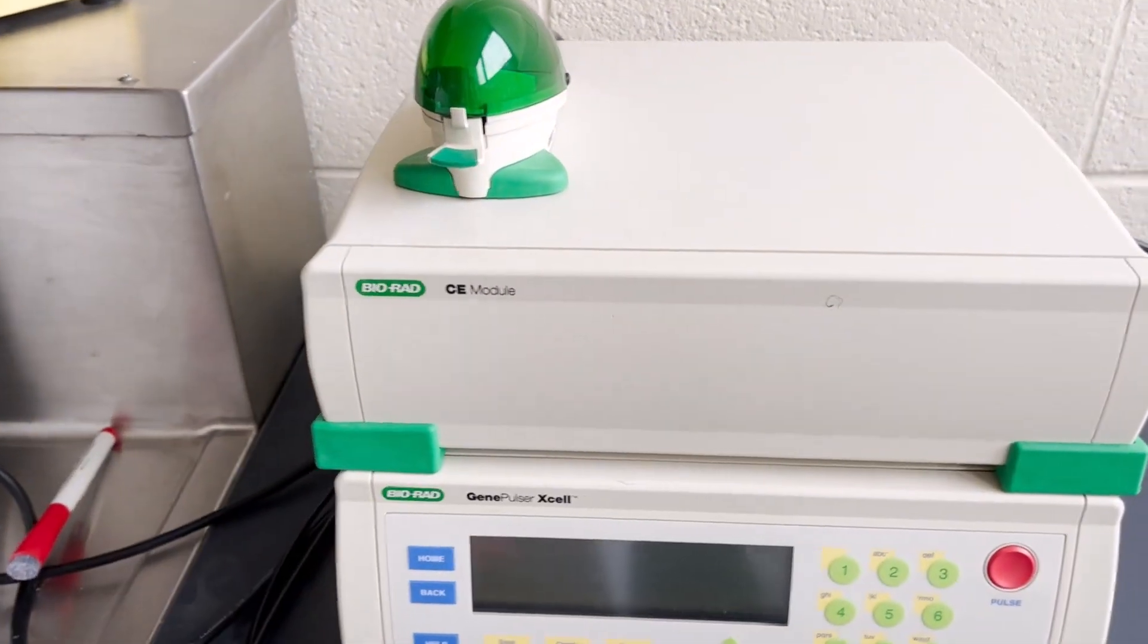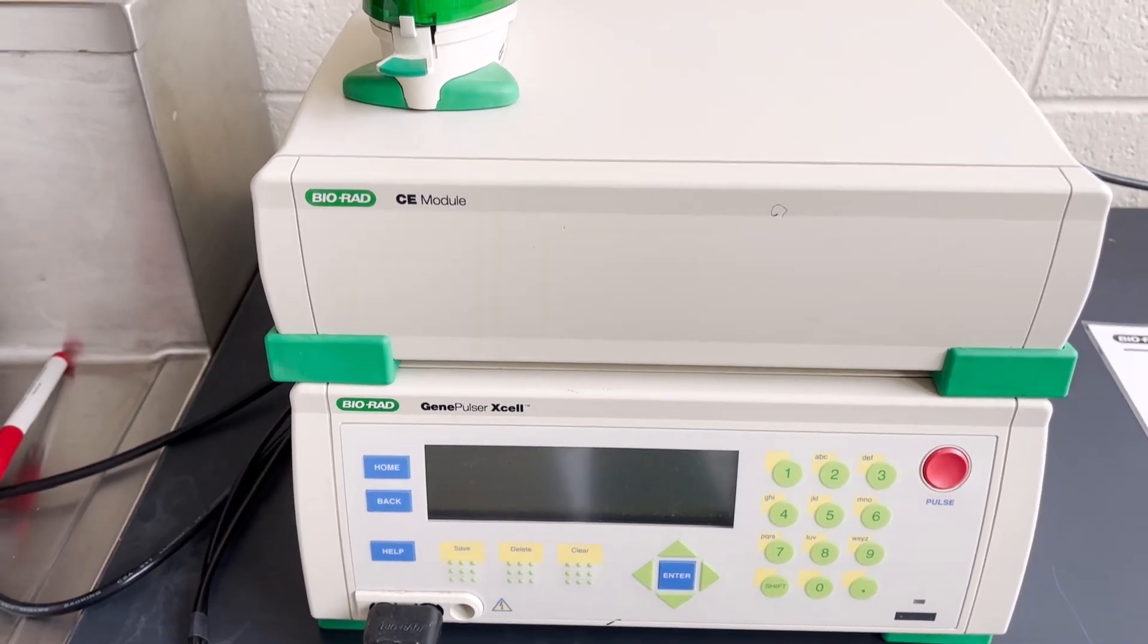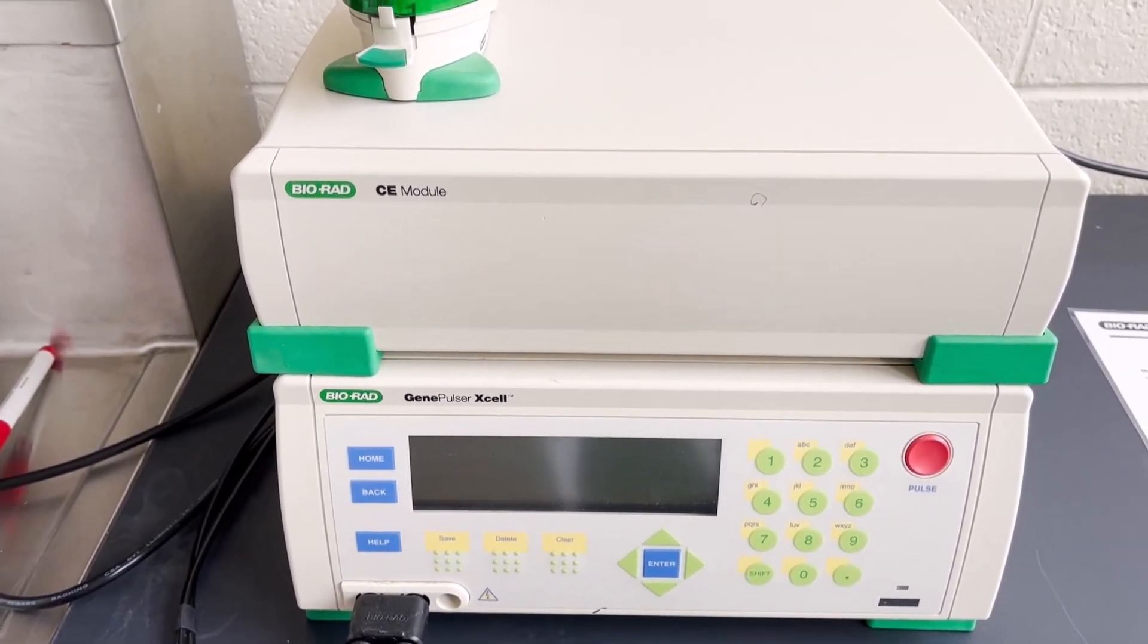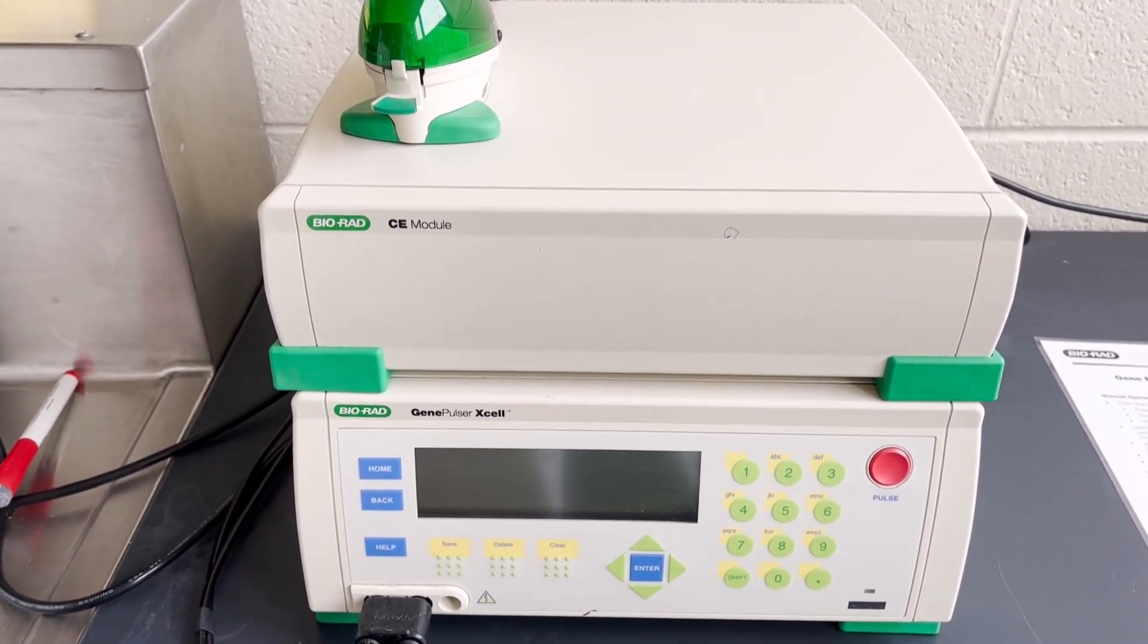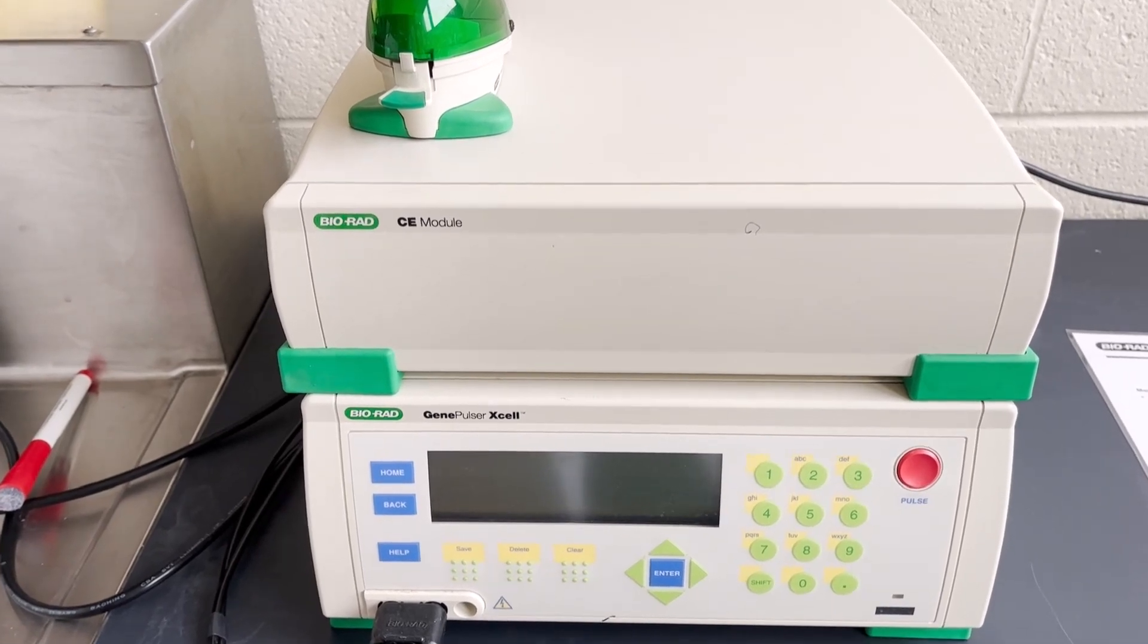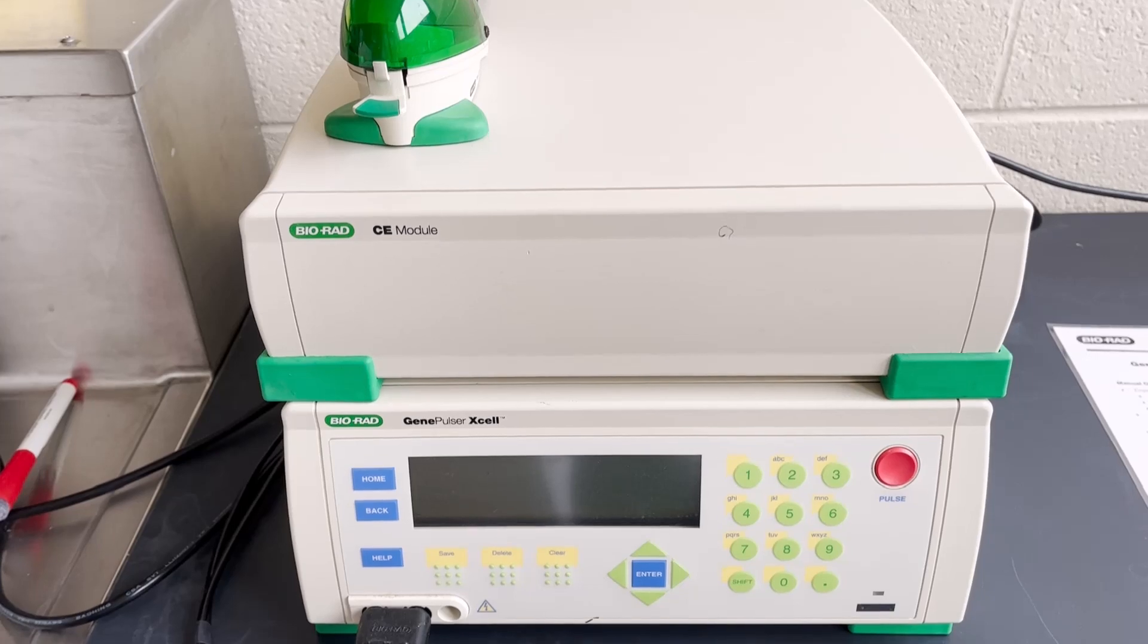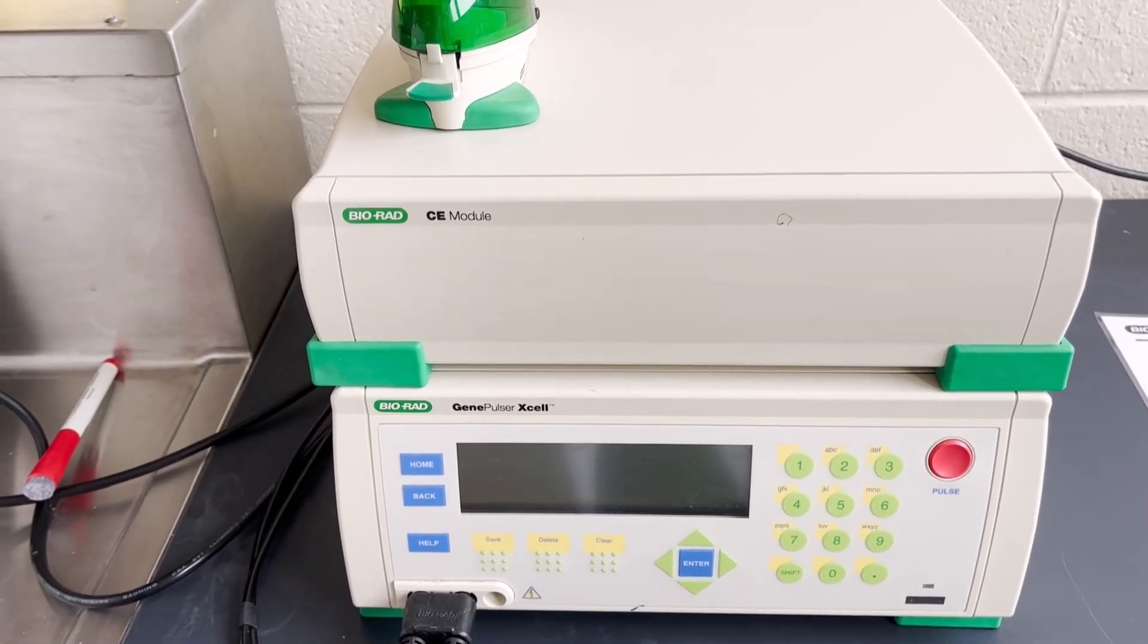On this current unit we have the CE module which is used for eukaryotic cells. A lot of things you can do with this module can also be done with the Lonza, so you may want to refer to that video as well. In the future if you ever see this machine also fitted with the PC module, that can be used with bacterial cells and buffer systems with very high resistance which is typical for bacterial and non-eukaryotic cells.